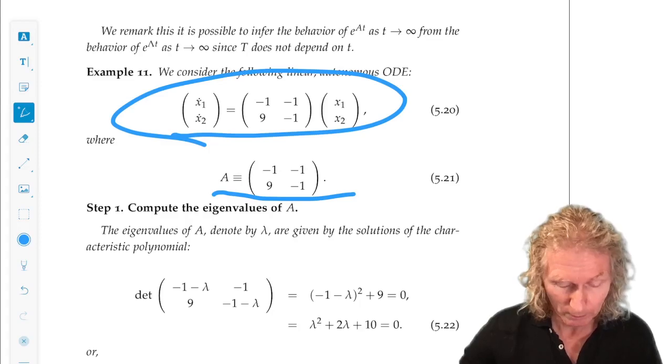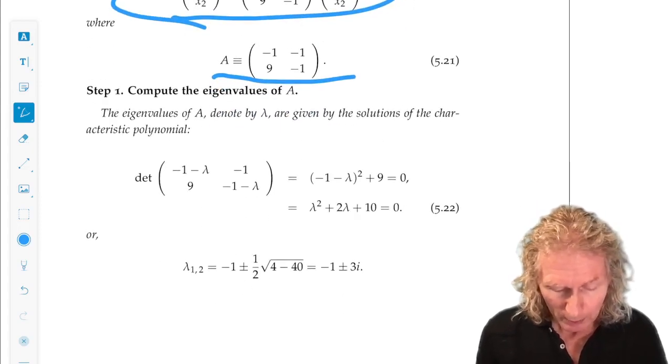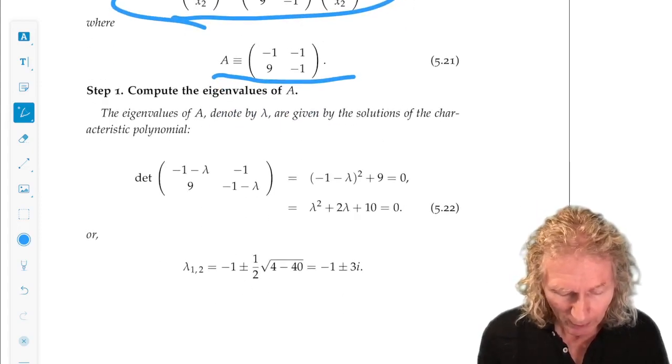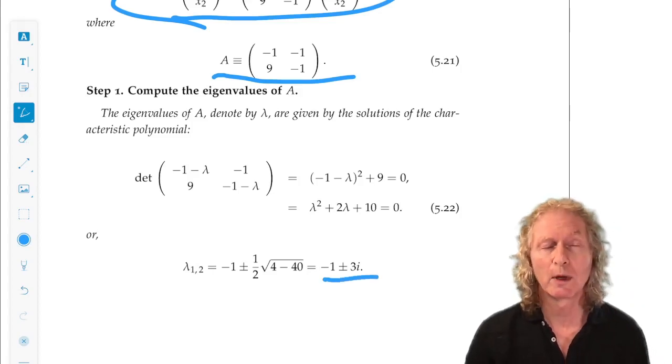First, we compute the eigenvalues. And we do that in the usual way, and we find that the eigenvalues are minus 1 plus or minus 3i.